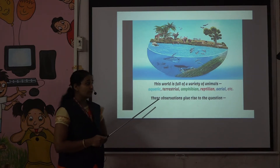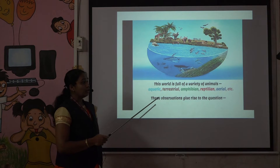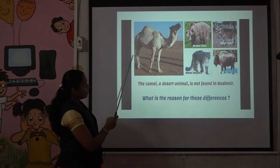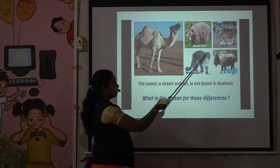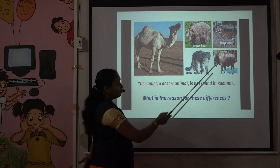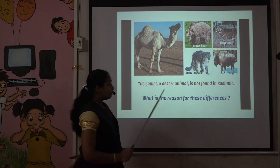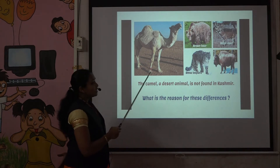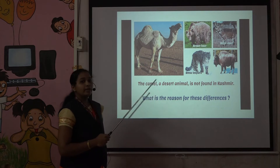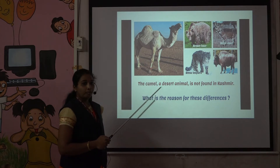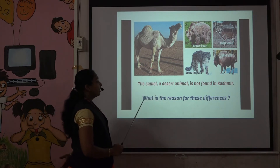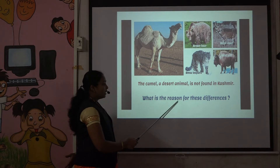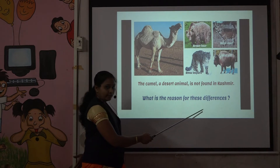Here some pictures are shown: camel, brown bear, muskier, snow leopard, and wildlife. All these animals live in different regions. Now a question arises: what is the reason for these differences?